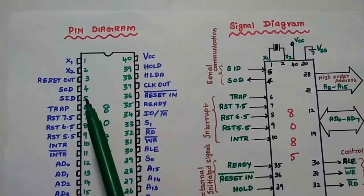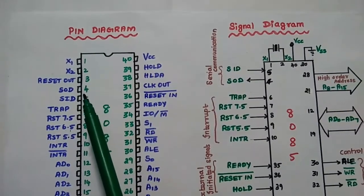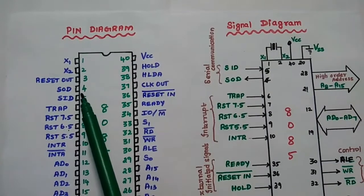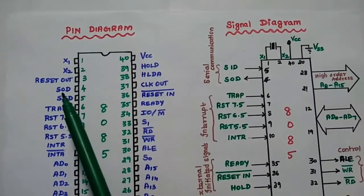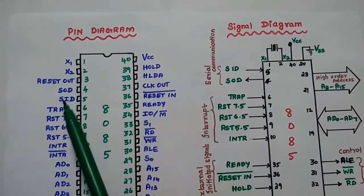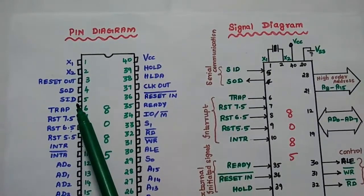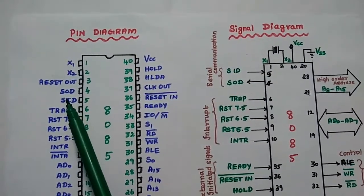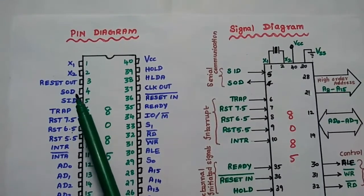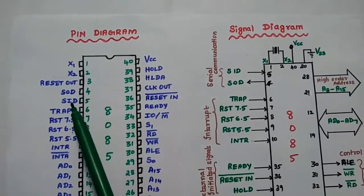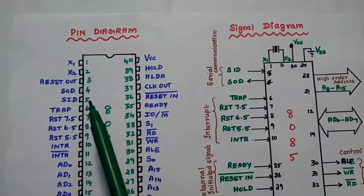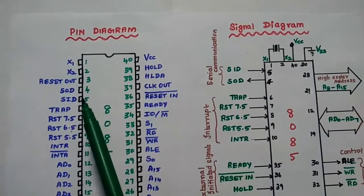The fourth and fifth pins are used for serial communication — SOD and SID. SOD means serial output data, and SID means serial input data.